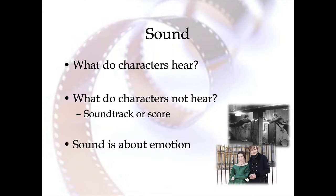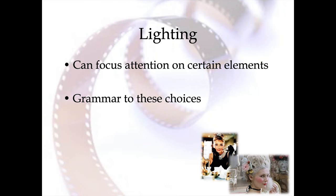Moving on to sound — there is sound in plays and musicals, but cinematic sound is going to be different. We get two major ideas: what can characters hear — people walking, door slamming, gunshot — and what characters do not hear, the soundtrack or score. Sound plays a really important role in creating emotion in viewers, not necessarily about being realistic but about creating emotion. Lighting allows us to focus attention on certain elements. Again, somewhat similar to the dramatic level, but cinematic lighting is different. There is a grammar to these choices: high key lighting, low key, a backlit subject — they all mean certain things.